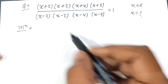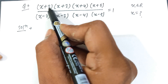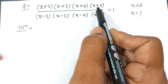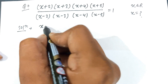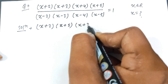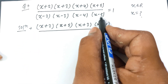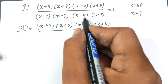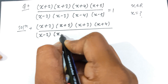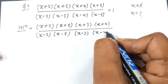We will solve the problem by regrouping. In the numerator, look carefully: the sum of 2 and 5 is 7, and the sum of 3 and 4 is also 7. So we multiply (x+2)(x+5) and (x+3)(x+4). In the denominator, -2 and -5 sum to -7, and -3 and -4 sum to -7, so we group (x-2)(x-5) and (x-3)(x-4). This equals 1.